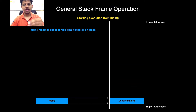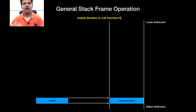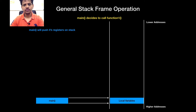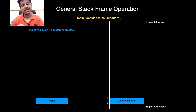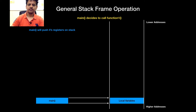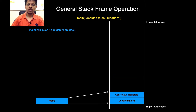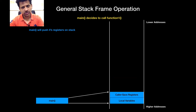Main's local variables will get pushed onto the stack. Now main decides to call function 1. Main will push its registers onto the stack so they don't get destroyed by function 1. This is known as a caller-save register.